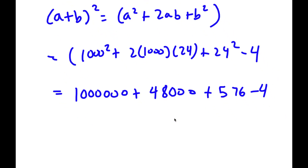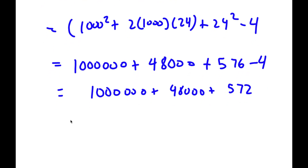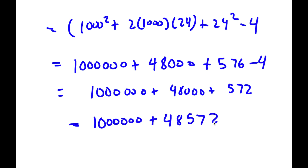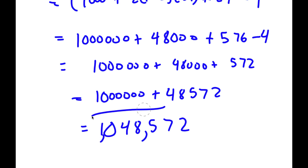Now I'm going to simplify all of this. Starting from the end: 576 minus 4 is 572. So now I have 1,000,000 plus 48,000 plus 572. Now 48,000 plus 572 is equal to 48,572. So now I have 1,000,000 plus 48,572, which is 1,048,572. So this is my answer.